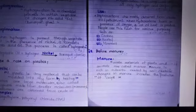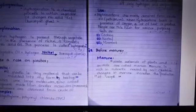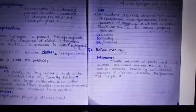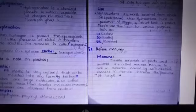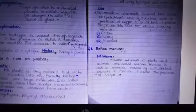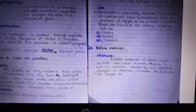Next question: Define manure. Answer: Waste materials of plants and animals are called manure. Manure is rich in nutrients needed by soil. Chemical changes in the manure increase the production of crops.